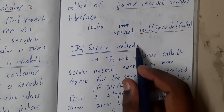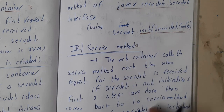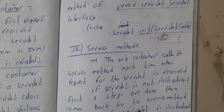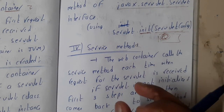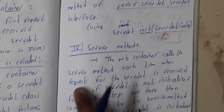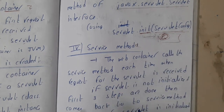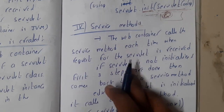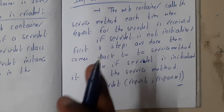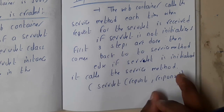The service method is a function or method that completes your particular task. The container must have the servlet first — if it is not there it needs to be created; if it is already there, you can use it directly. The web container calls the service method each time a request for the servlet is received. If the servlet is not initialized, the first three steps are performed and then it comes to the service method; otherwise it is used directly. The syntax includes servlet request and response parameters.